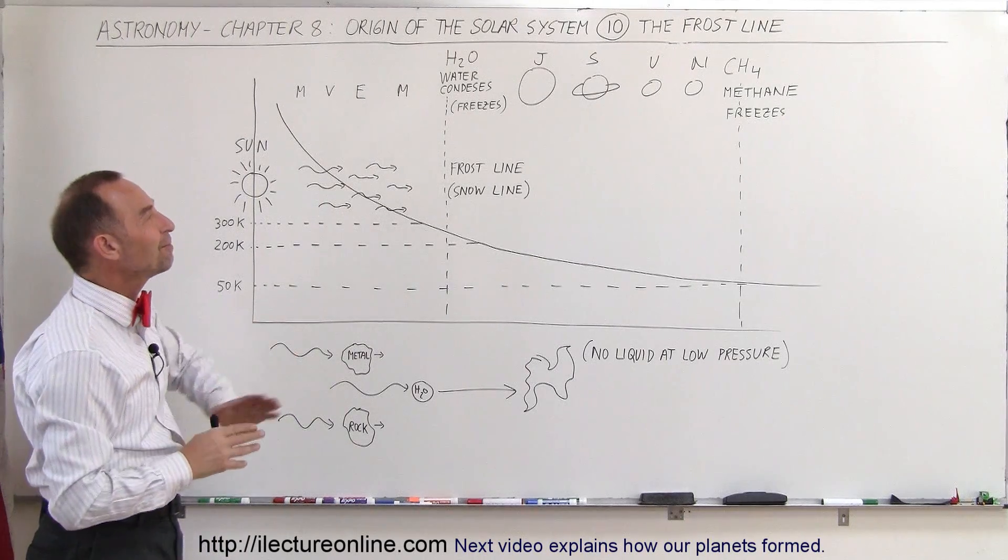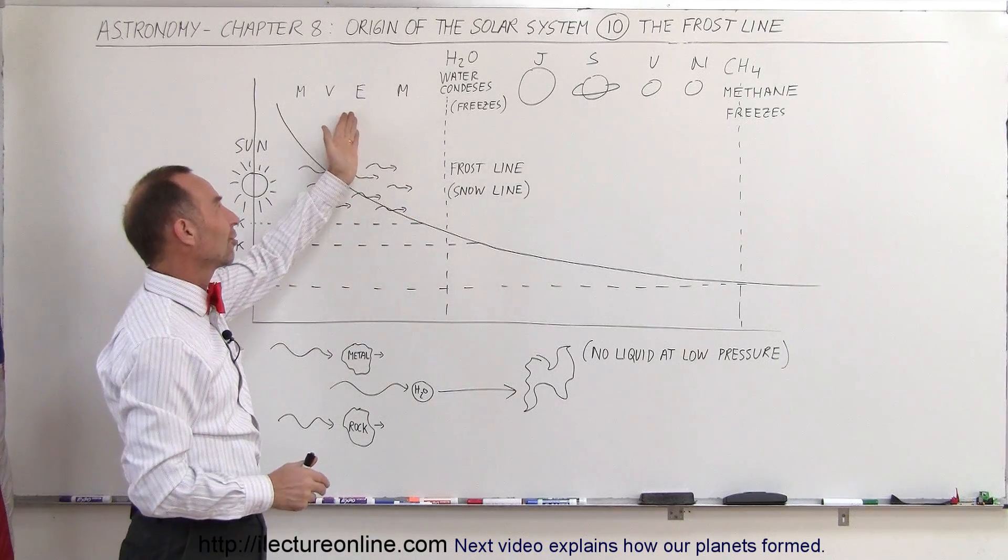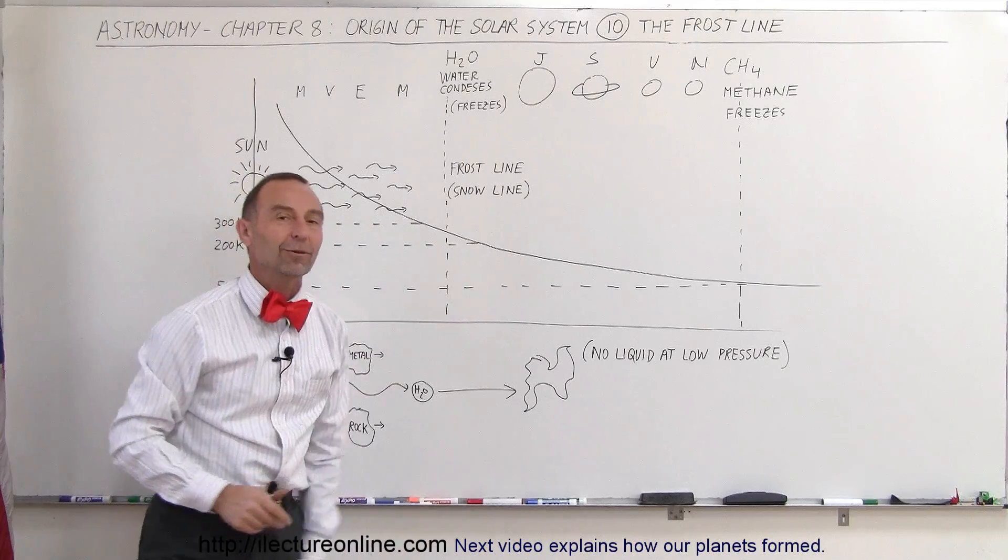That was the early solar system. The frost line is the point where we can see the terrestrial planets in front and the gas planets behind it.